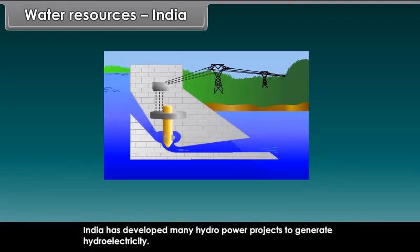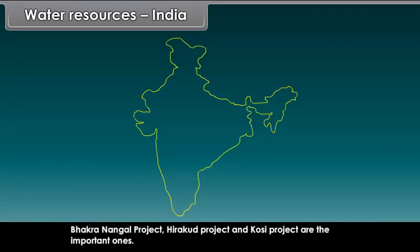India has developed many hydropower projects to generate hydroelectricity, of which Bhakra Nangal project, Hirakud project, and Kosi project are the important ones.